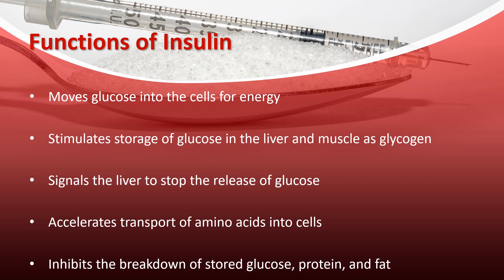Insulin tells the liver to stop releasing glucose when more is not needed. It accelerates transport of amino acids into the cells and inhibits the breakdown of stored glucose, protein, and fat. All of these things allow the cells to function properly and allow for backup sources of glucose for energy. The pancreas also secretes a small amount of insulin when we are not eating, called basal insulin, and secretes glucagon from the alpha cells, which stimulates the liver to release stored glucose when the body needs energy. Insulin and glucagon work together to keep blood glucose levels in a constant, even state.